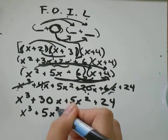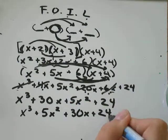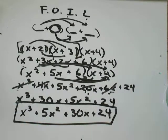And I'll write my exponents from greatest to least. And that would be my answer. x cubed plus 5x squared plus 30x plus 24.